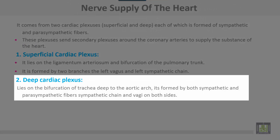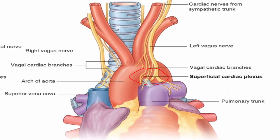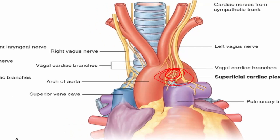The deep cardiac plexus lies on the bifurcation of the trachea, deep to the aortic arch. It is formed by both sympathetic and parasympathetic fibers from the sympathetic chain and both vagi. This is the superficial cardiac plexus on the ligamentum arteriosum and the aortic arch, and this is the deep cardiac plexus on the bifurcation of the trachea.